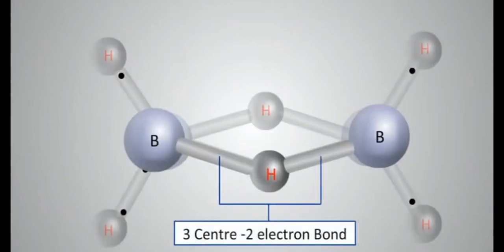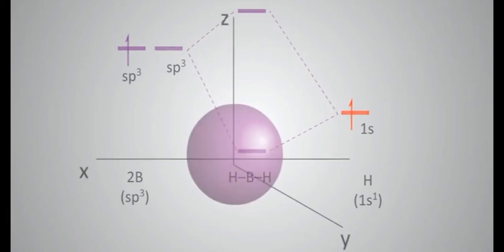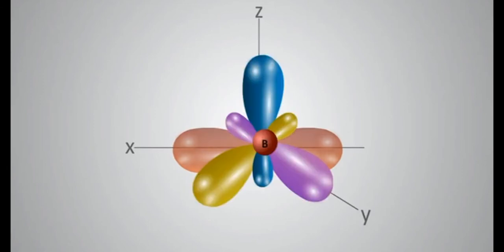This structure can be explained on the basis of hybridization, and it undergoes SP3 hybridization, involving 2S and all the three 2P orbitals, including one empty orbital. The four SP3 hybrid orbitals adopt tetrahedral arrangement, as shown in the animation.